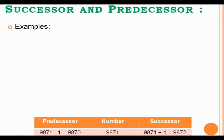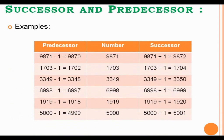Look at some more examples of predecessor and successor. Look at this particular number — you have to find out the successor and predecessor. Just add 1 to find the successor and just subtract 1 to find the predecessor. Please go through it and clear your concept. I suggest you to do some more examples for better understanding.